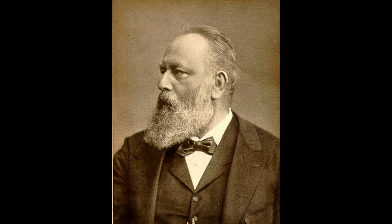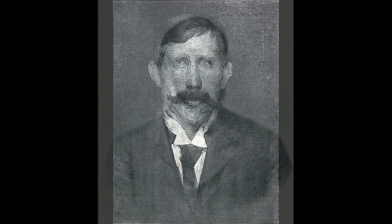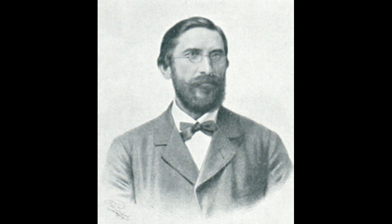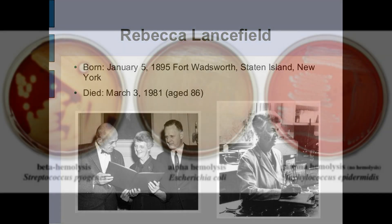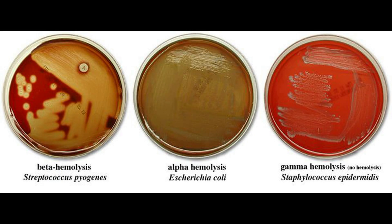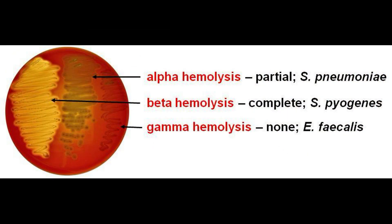In 1874, it was depicted to be a bacterial infection by a man named Theodore Billroth. About a decade later, it was isolated by Frederick Fellisen in 1883. In the early 1900s, it was given the name Streptococcus pyogenes by a man named Frederick Julius Rosenbach. Then finally, in the 1930s, it was studied for hemolytic activity by a woman named Rebecca Lansfield, who tested the bacteria on blood and determined that the pathogen was practicing beta hemolysis.